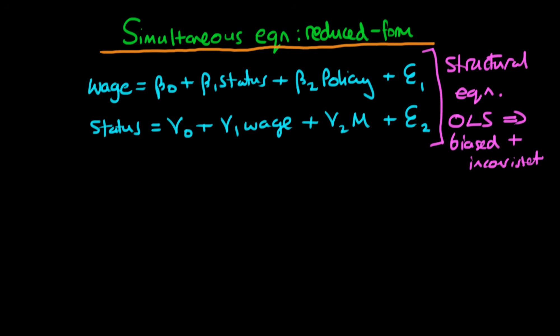But at the end of the last video we also derived another form of our equations. We found that we could actually write that wage was a function of delta 0 plus delta 1 times the policy term plus delta 2 times whether an individual is married plus some composite error term V1. And in order to get this form essentially what we need to do is we need to substitute in status, which is given by the second equation, into that of the first equation.